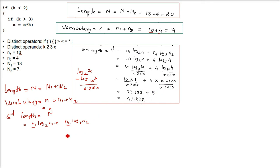Next is purity ratio. Purity ratio will be n cap, the estimated length we just calculated, divided by capital N. n cap was 41.222 and capital N is 20. So the purity ratio is 2.0611.